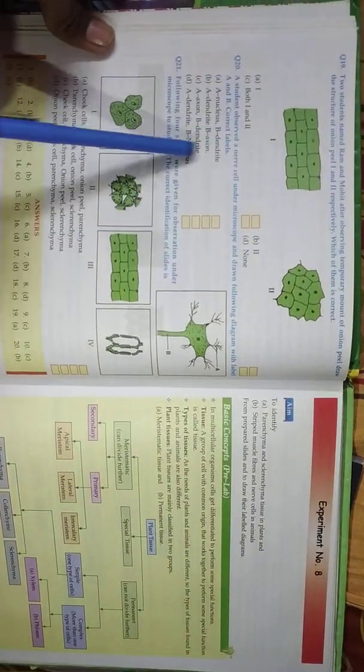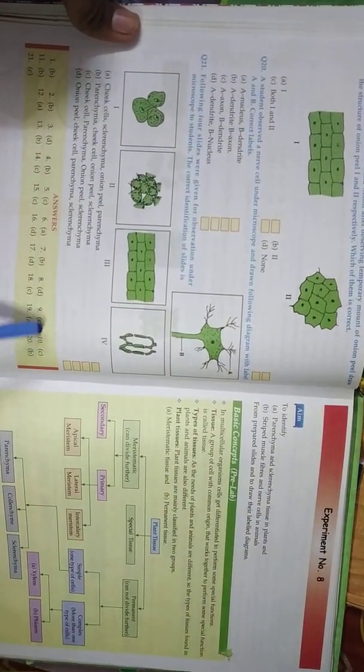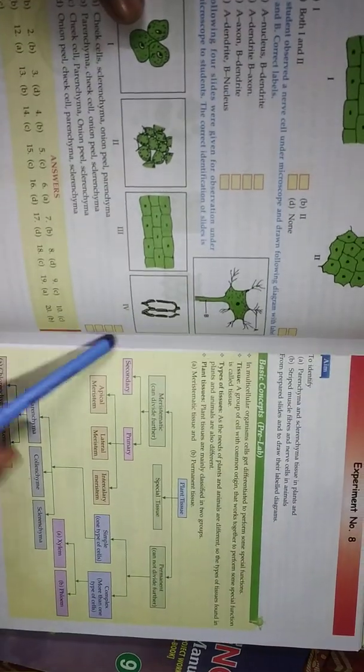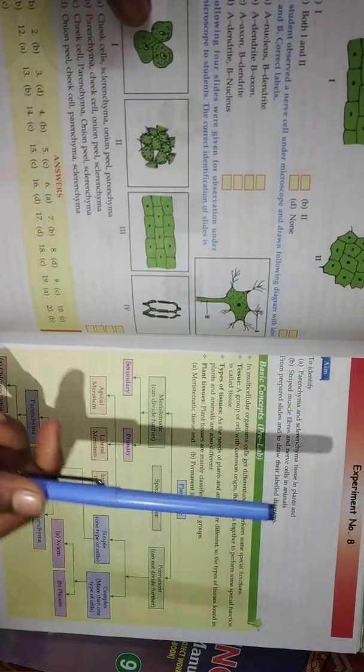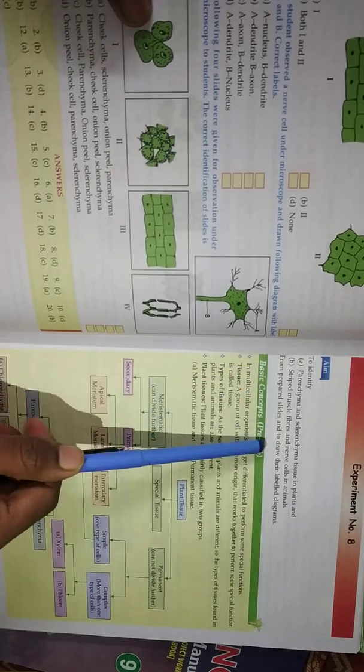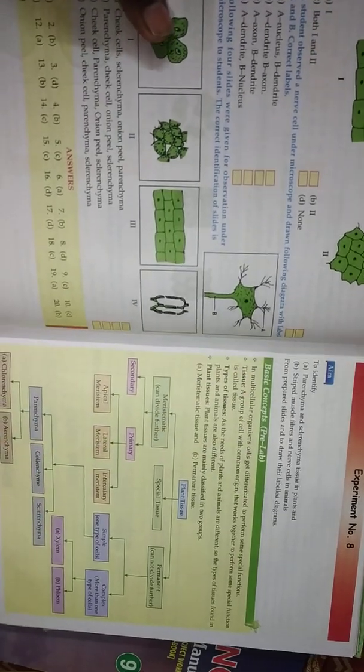And where is question 19 and answers. In the next experiment: to identify parenchyma, collenchyma tissue in plants, striped muscle fiber, and nerve cells in animals from prepared slides.